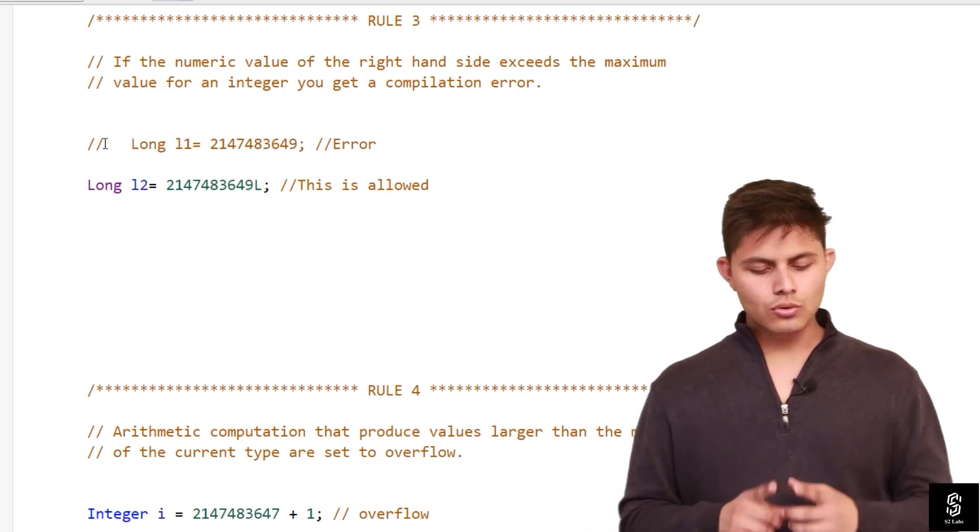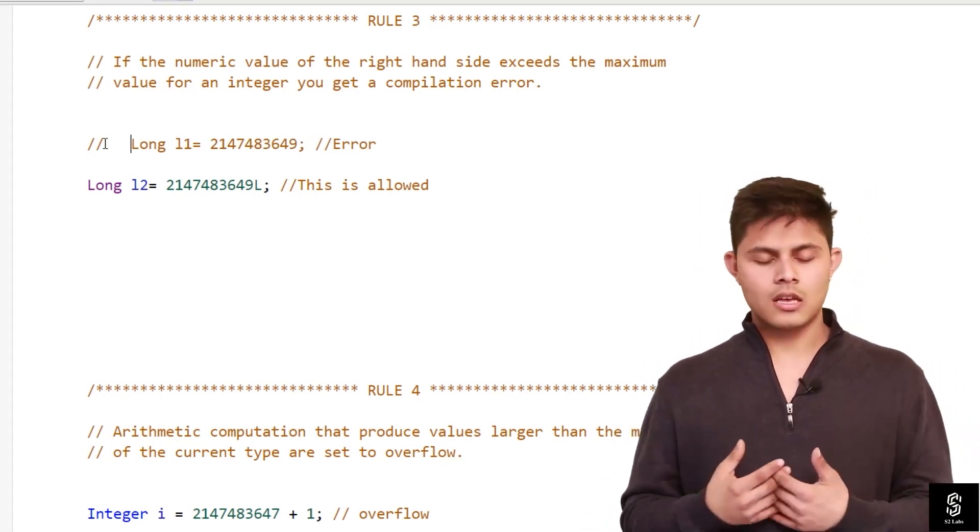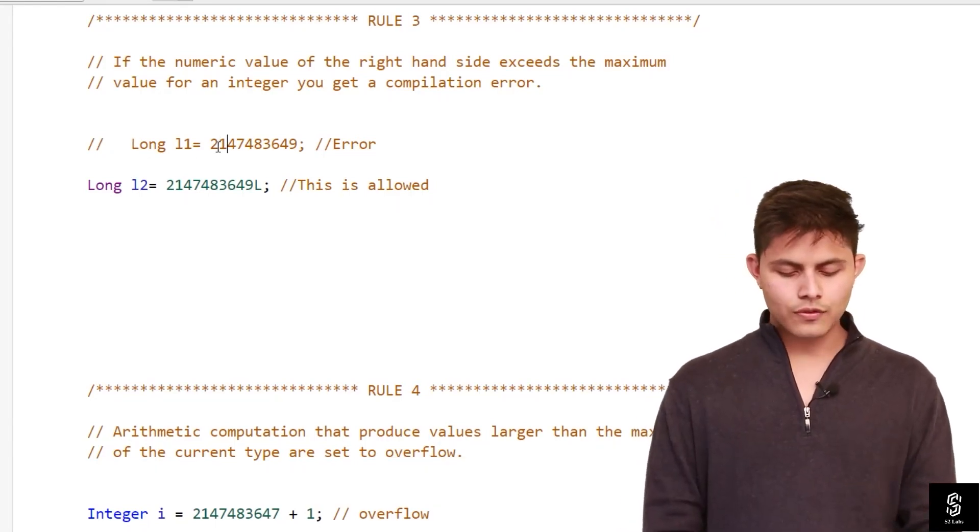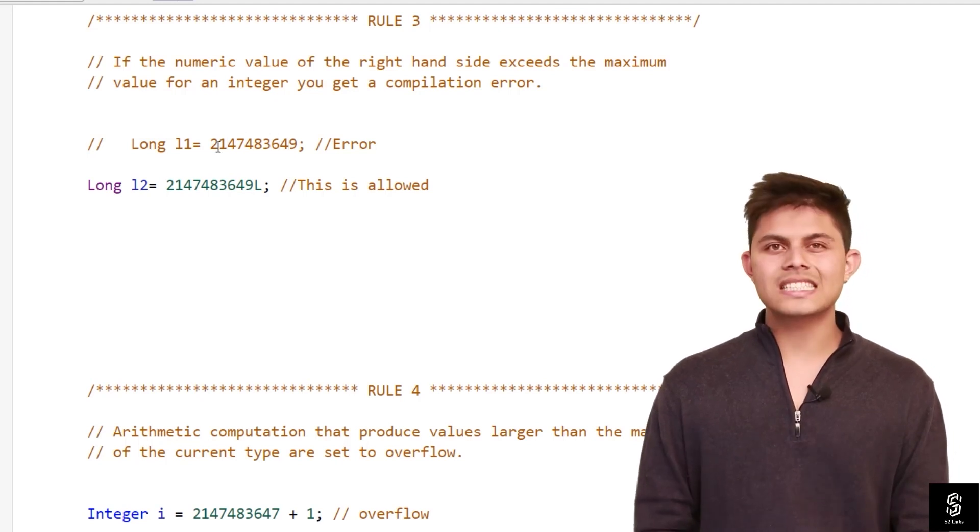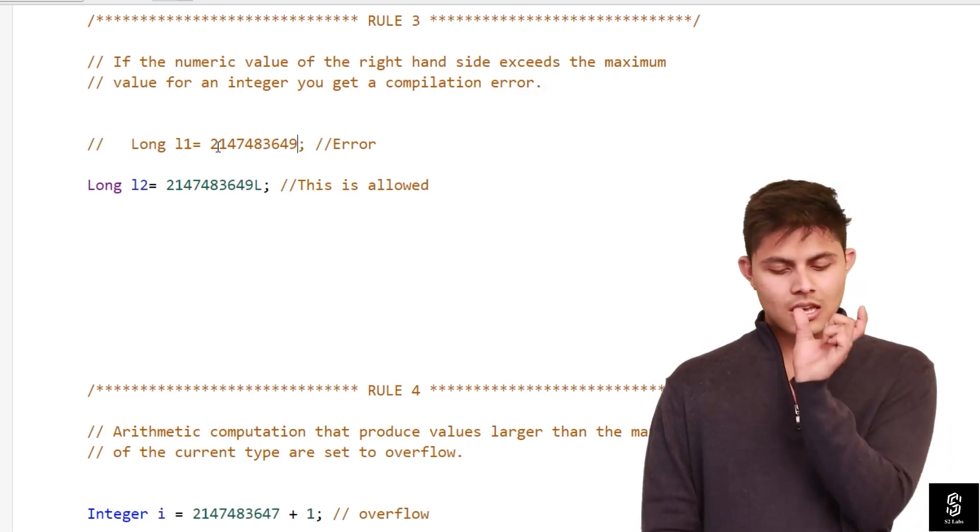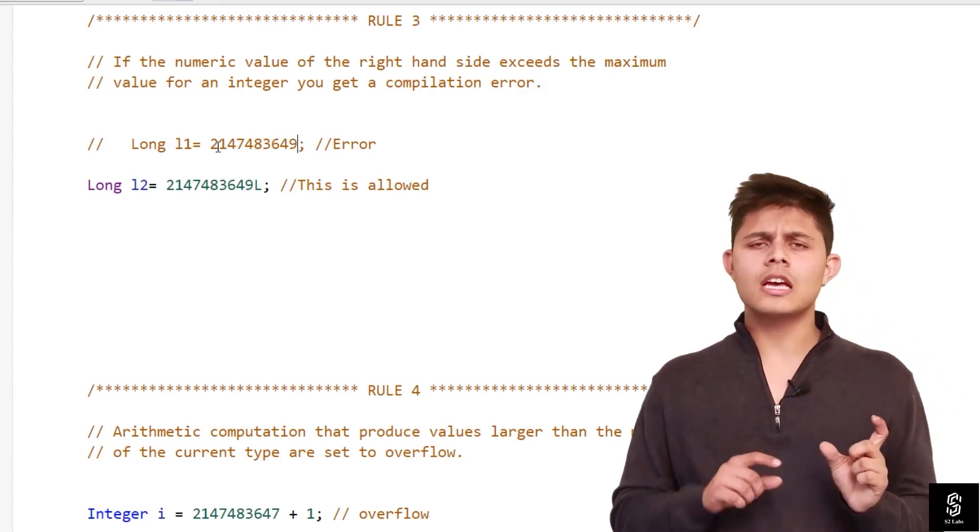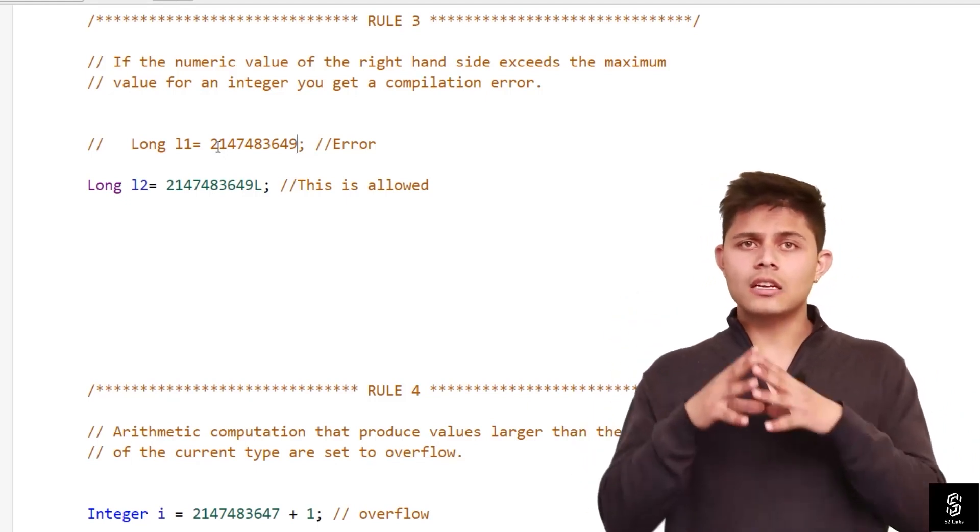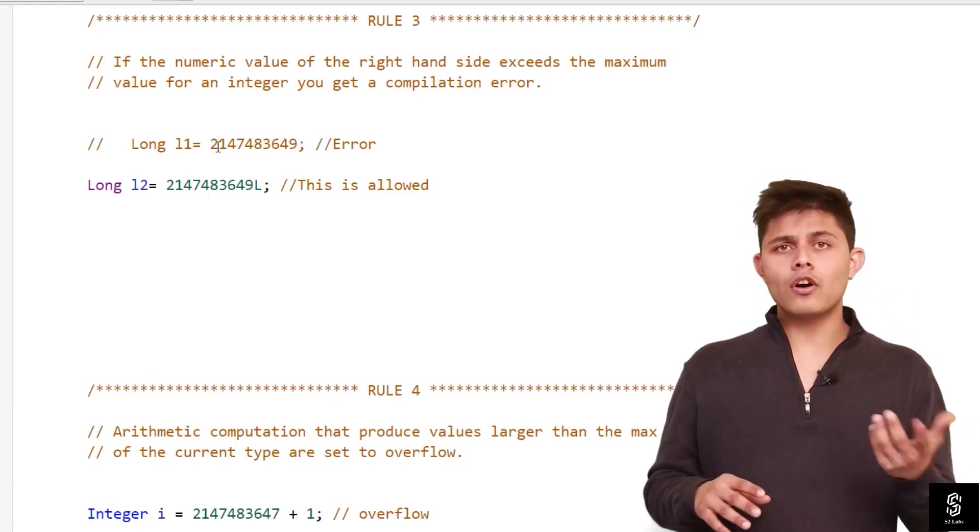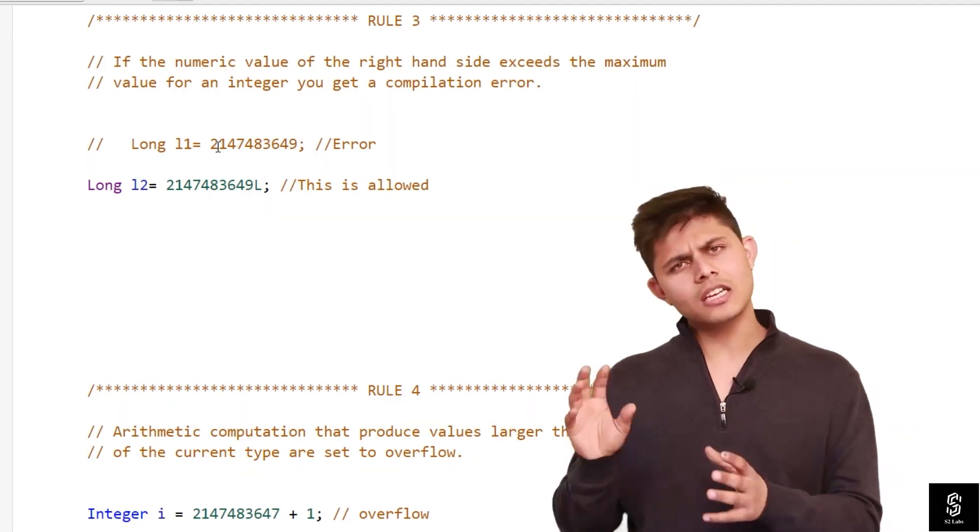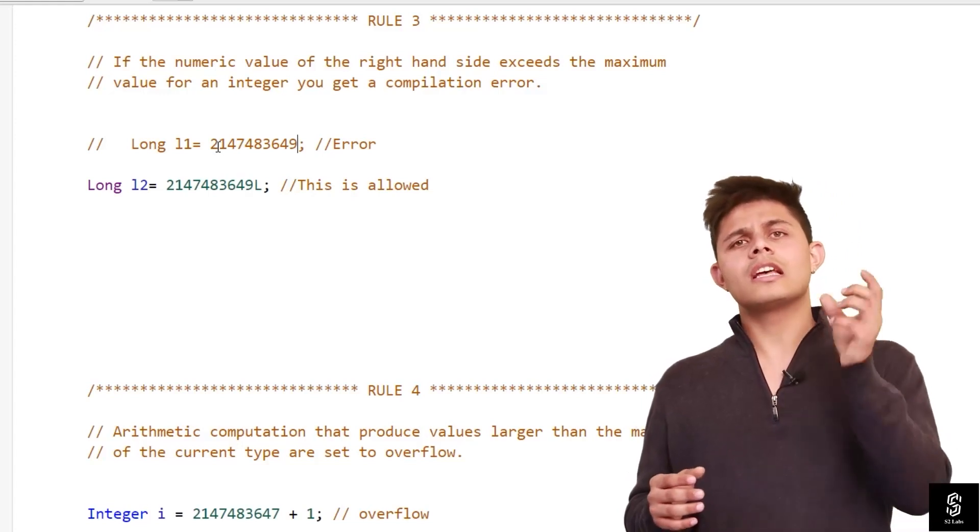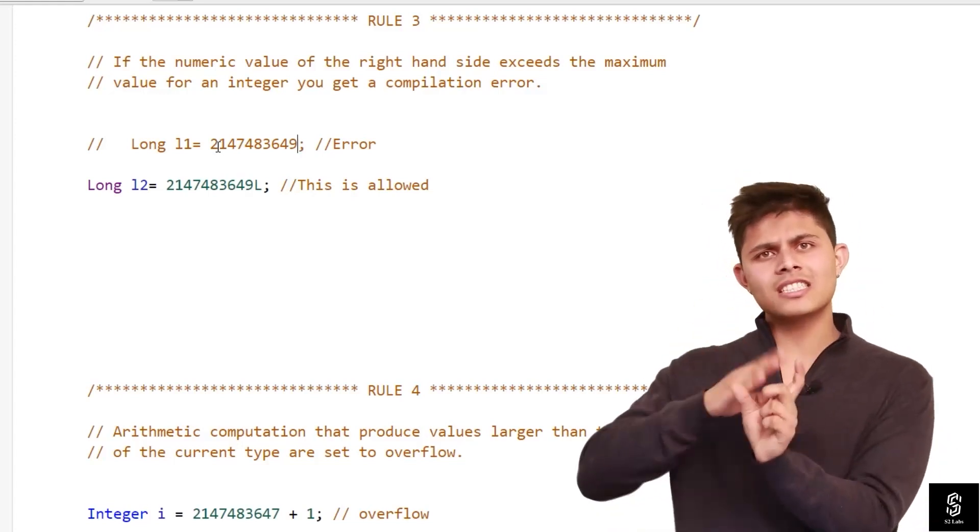equals to 2147483649. The range for long values or for integer values is 2147483647. It's not available till 49. So this value or the literal that you have specified here is out of the range of integer. Apex compiler considers every number as an integer by default if there is no decimal inside it. If there is a decimal, then it will consider it as a double value by default.